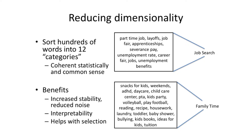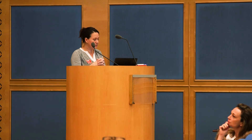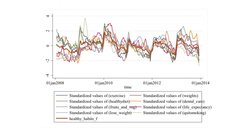The benefits of this approach are not only that it is more stable and more interpretable, it also helps a great deal with selection. Here I want to show an example of one grouping that we called 'healthy habits.' We have search volumes for words like exercise, healthy diet, fruits and vegetables, quit smoking, and dental care. You can see that even though there's a lot of variation in volume, they're all following a similar pattern. Using those, we constructed the composite variable called 'healthy habits,' shown in the dark line.